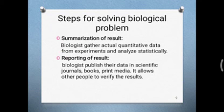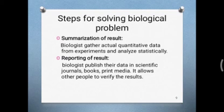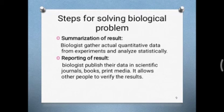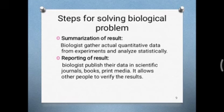Next is summarization of results on page 23. Biologists gather actual quantitative data from experiments. The data for each of the groups are then averaged and compared statistically to draw conclusions. Biologists also use statistical analysis — meaning biologists apply mathematical rules to summarize the data obtained from experiments.